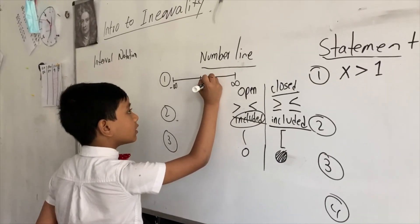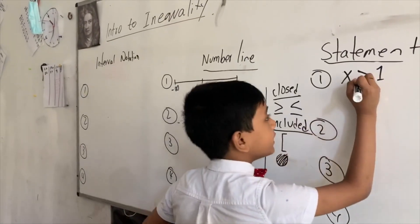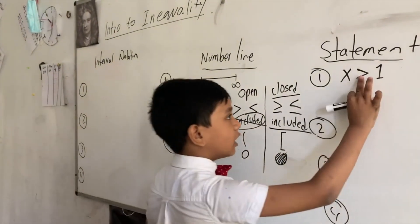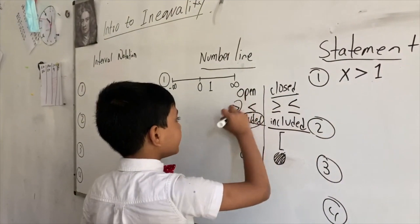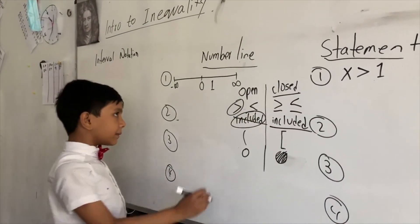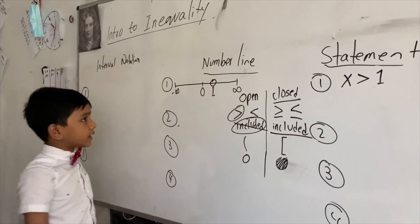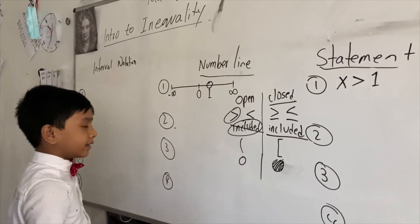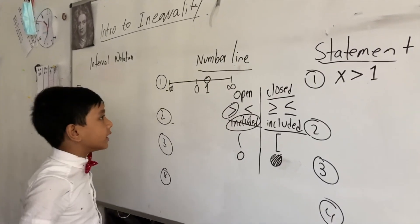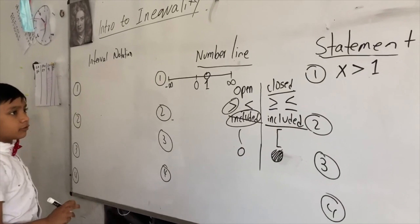For this statement, we can see that there's no equal to sign on the bottom, so we can identify it as an open circle. That means we place a circle that is open and not filled in above our one. So now, let's try writing the interval notation.